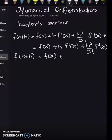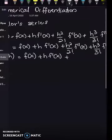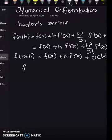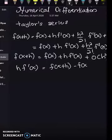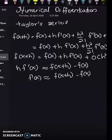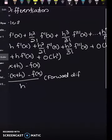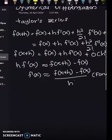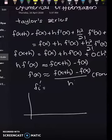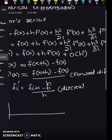We can simplify this, so f(x+h) approximates to f(x) plus h·f'(x) divided by 1 factorial. The approximation for f'(x) is then f(x+h) minus f(x) divided by h. We call this the forward difference formula. In discrete form: f'ᵢ ≈ (fᵢ₊₁ - fᵢ) / h.